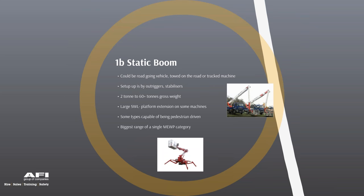Static boom MEWPs can be road-going vehicles, towed machines, or tracked machines. Because they are static, they will not lift until set up on outriggers and stabilizers. These range from around two tonnes to 60-plus tonnes gross weight, with platform safe working loads accommodating sometimes five or six people. Static boom is one of the largest single MEWP categories in terms of size range — from small trailer mounts to large truck mounts.